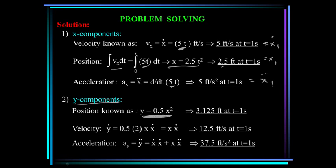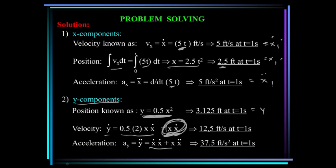For the y components, the position y equals 0.5 times x squared. At t equals 1 second with x equals 2.5, y equals 3.125 feet. Using the chain rule, y-dot equals x times x-dot, giving 12.5 feet per second at t equals 1 second. Differentiating y-dot using the product rule gives y-double-dot equals 0.1 times x-dot squared plus 0.1 times x times x-double-dot, which equals 37.5 feet per second squared.